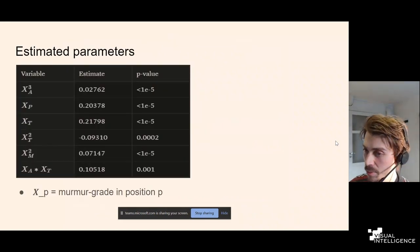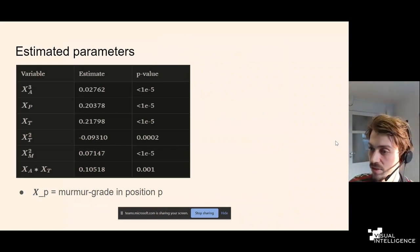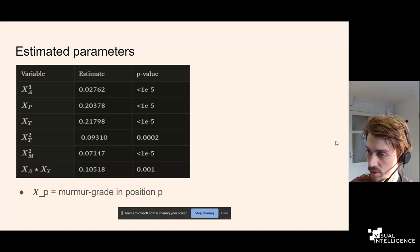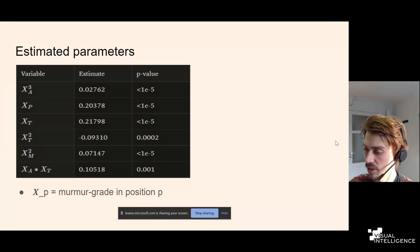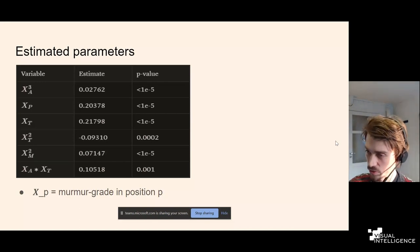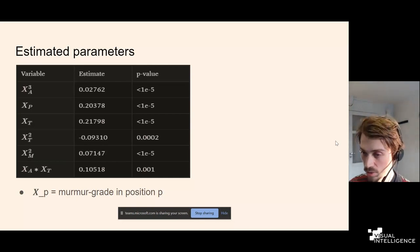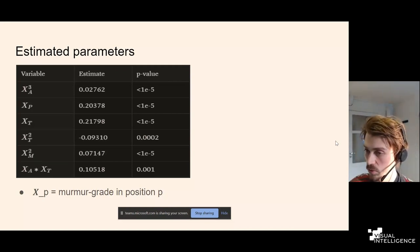The fitted parameters in the final model showed that all four murmur grades contributed highly significantly to the prediction. This was somewhat surprising — one might expect that once the aortic and possibly pulmonic position are included, more distant positions would only provide redundant information. But that was not the case, and using all positions in this fashion produced a significant improvement in performance.